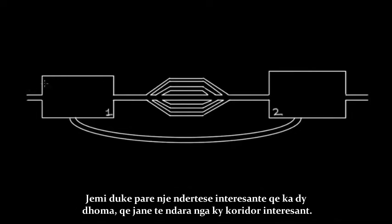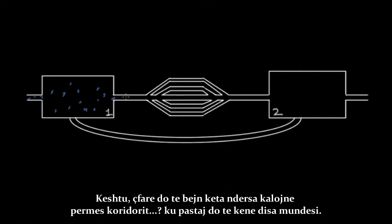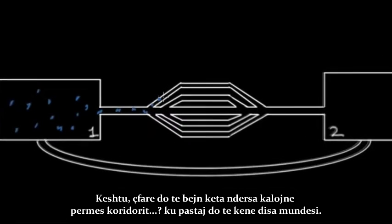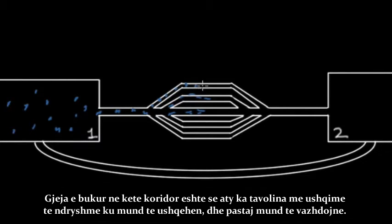We're looking at a very interesting building that has two rooms separated by a hallway in between. Some people are entering into room number one, and they're trying to get to room number two. So what they're gonna do is go via this hallway, and then they have a number of options — they can take this smaller hallway here, or they can take this one here, or this one here.